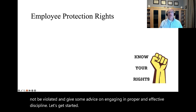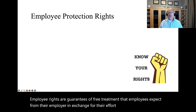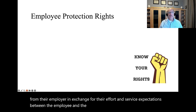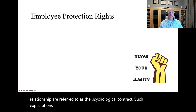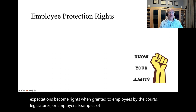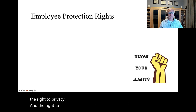Employee rights are guarantees of free treatment that employees expect from their employer in exchange for their effort and service. Expectations between the employee and the employer about the employment relationship are referred to as the psychological contract. Such expectations become rights when granted to employees by the courts, legislatures, or employers. Examples of employee protection rights include the right to privacy and the right to protest unfair disciplinary actions.